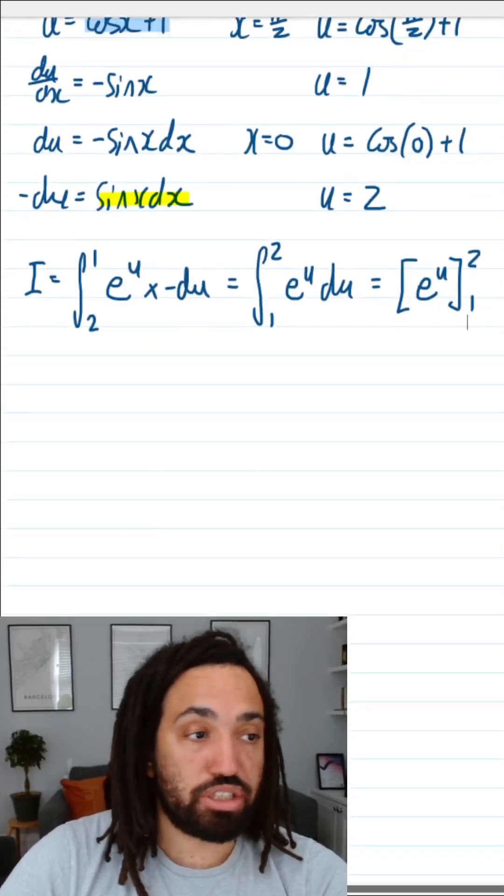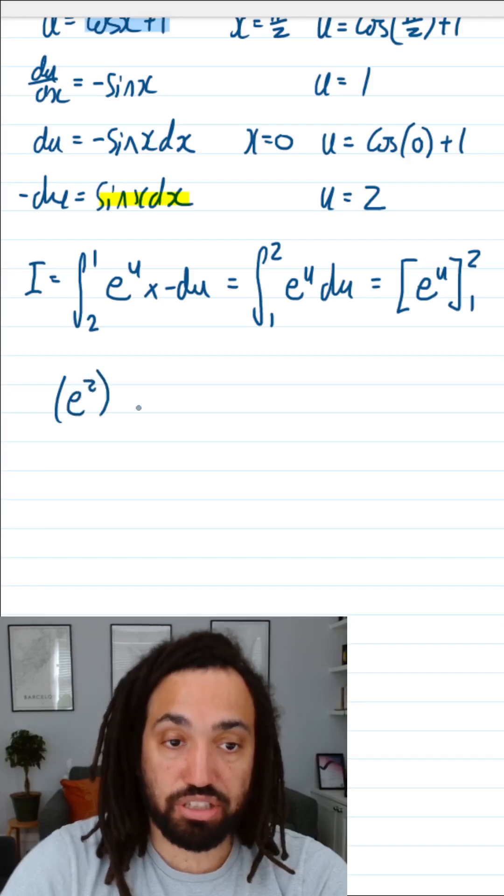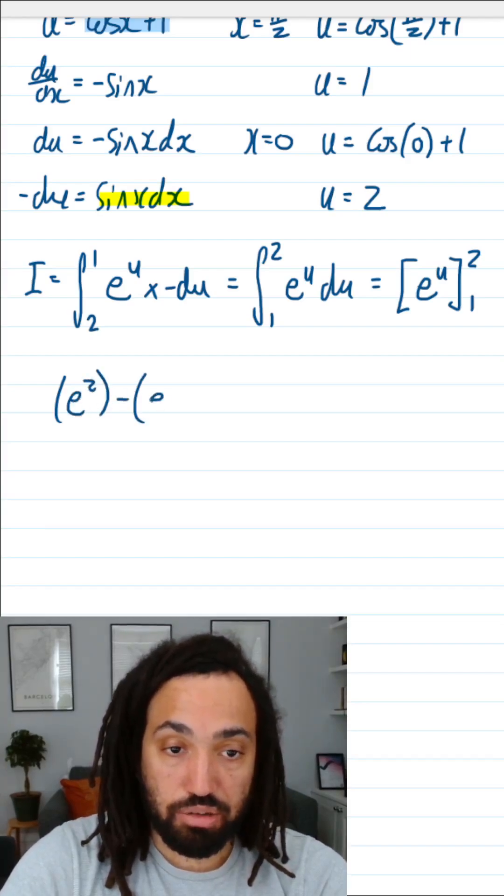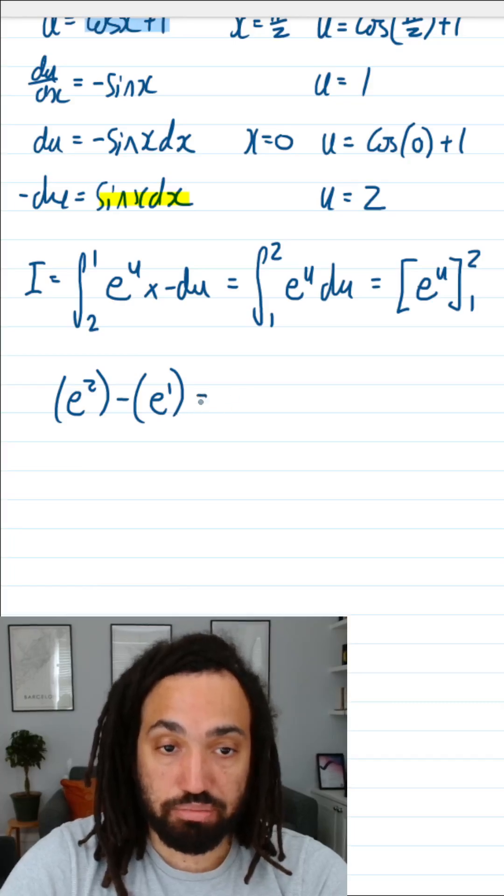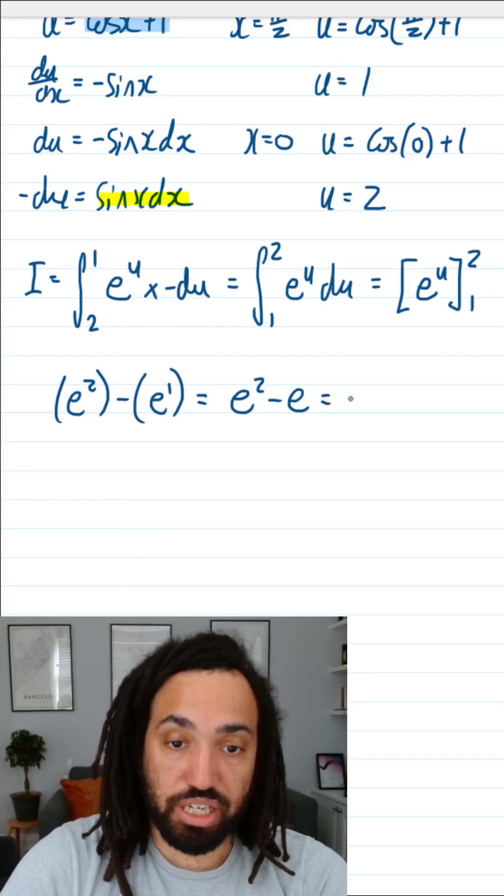So all that's left to do now is substitute in these limits. The upper limit is 2, so that gives us e to the 2. The lower limit is 1, so that gives us e to the 1. This is the same as e squared minus e, which is e times (e minus 1).